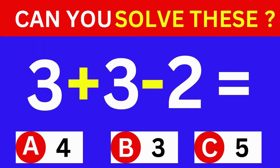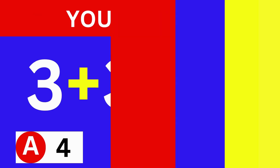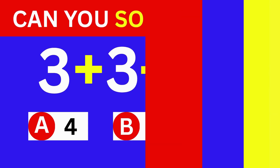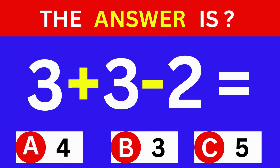3 plus 3 minus 2 equals? A: 4. B: 3. C: 5. The answer is option A, which is 4.